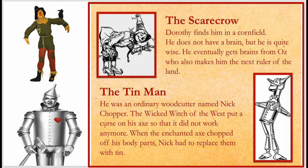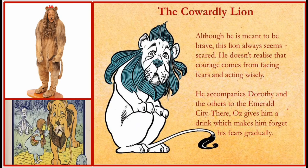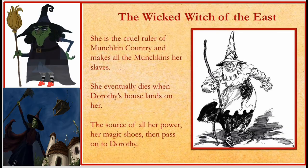All these characters — the Scarecrow, the Tin Wood Man, and the Cowardly Lion — are Dorothy's friends, and all of them are accompanying Dorothy to meet the Great Wizard of Oz.